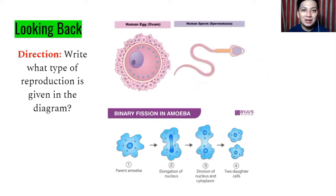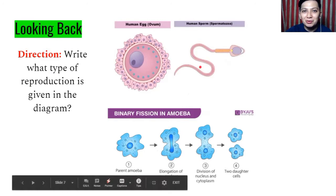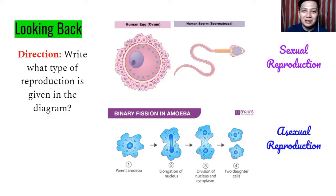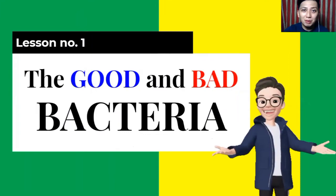Let's start with the looking back. Last time, our topic was about different kinds of cells. Write what type of reproduction is given in the diagram. We have the human egg cell, human sperm cell, and amoeba. The correct answer for the first two pictures is sexual reproduction, and the amoeba is asexual reproduction. Sexual reproduction involves two parents, while asexual reproduction involves only one parent.